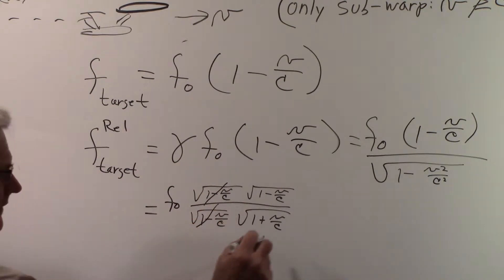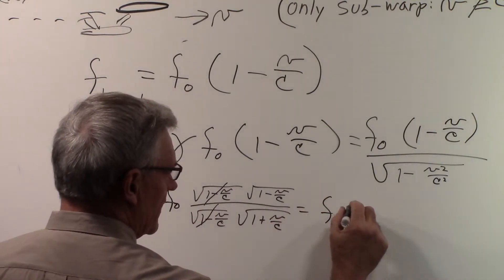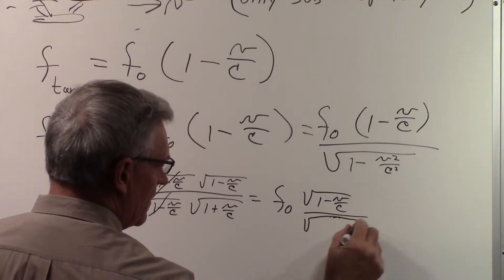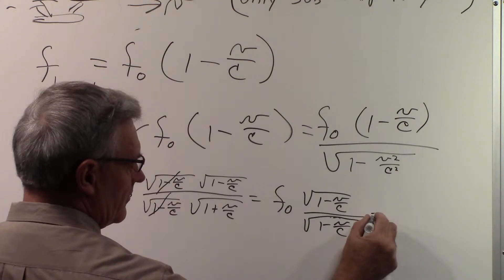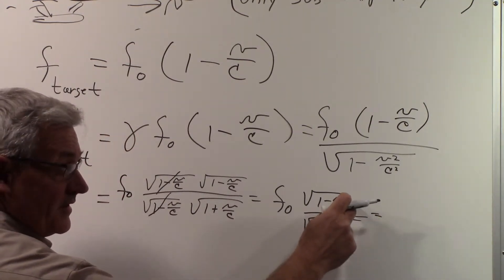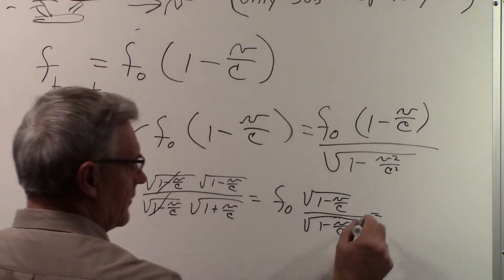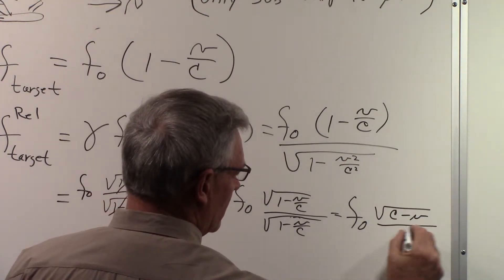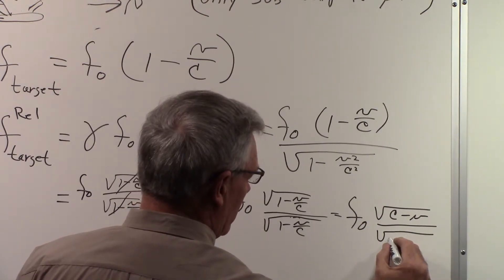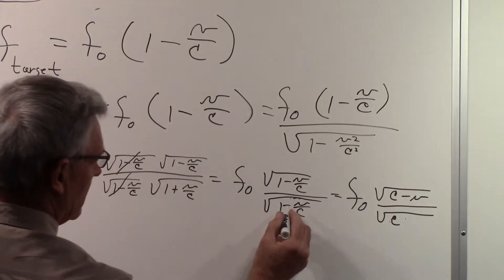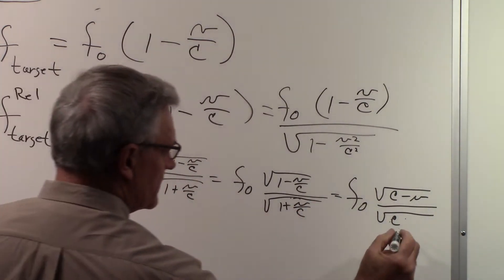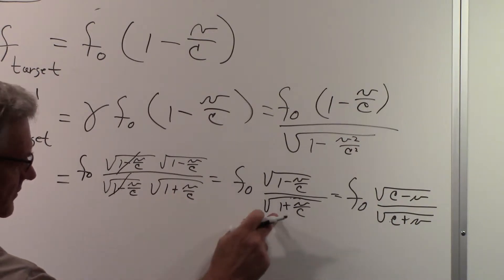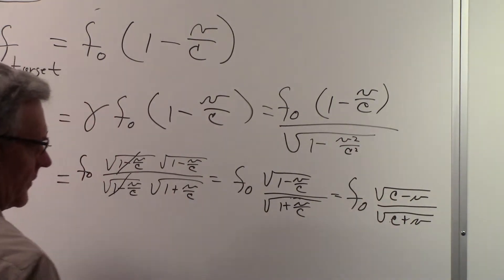The common square root of (1 minus v over c) factors cancel out, and we wind up with f0 times the square root of (1 minus v over c) over the square root of (1 plus v over c). Multiplying numerator and denominator each by c, we get f0 times the square root of (c minus v) over the square root of (c plus v). That is the relativistic frequency seen at the target.